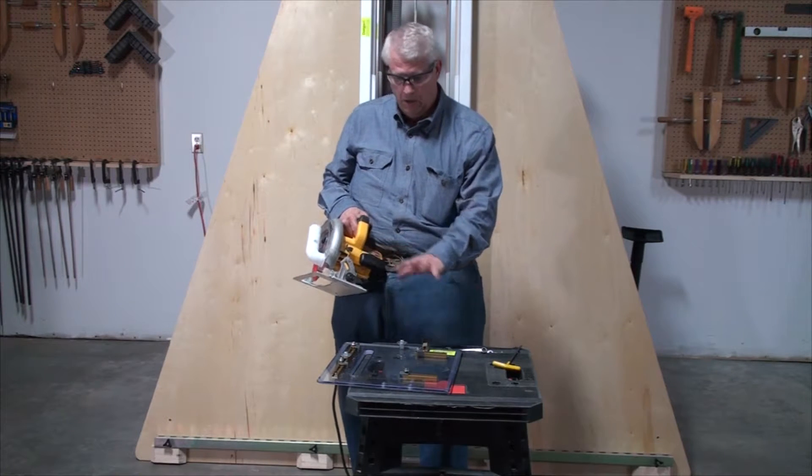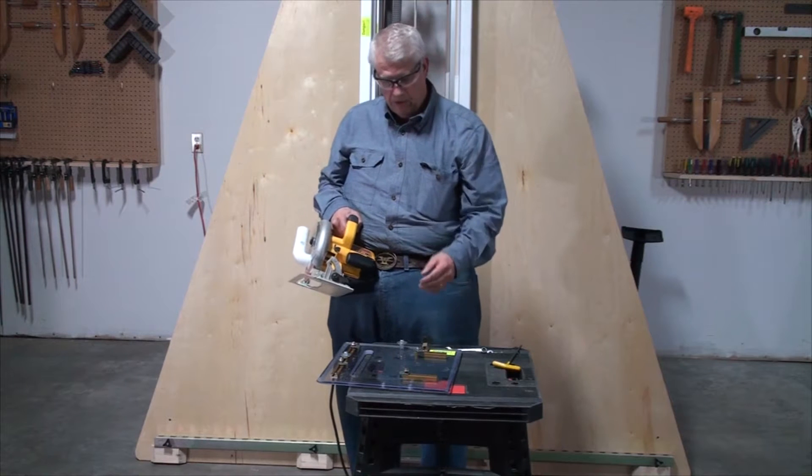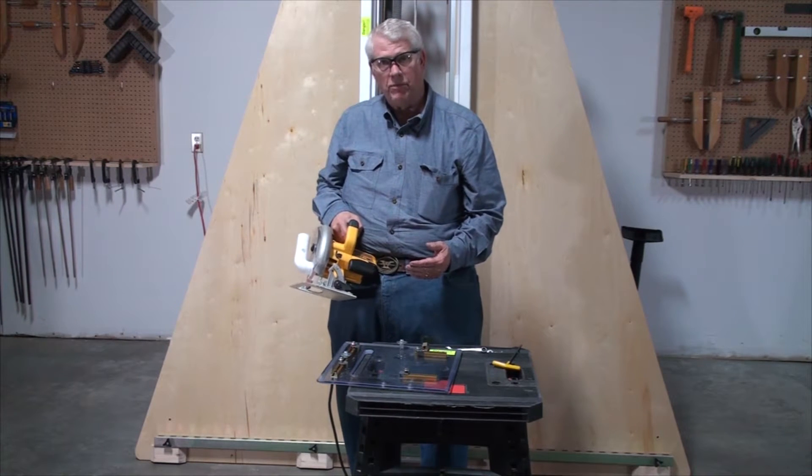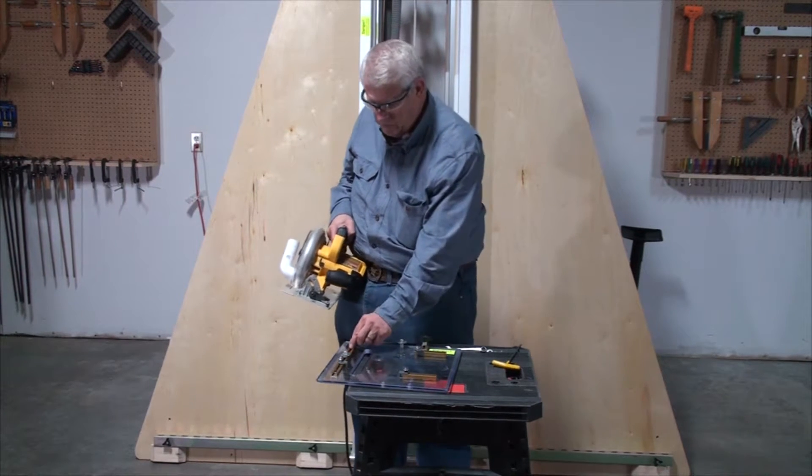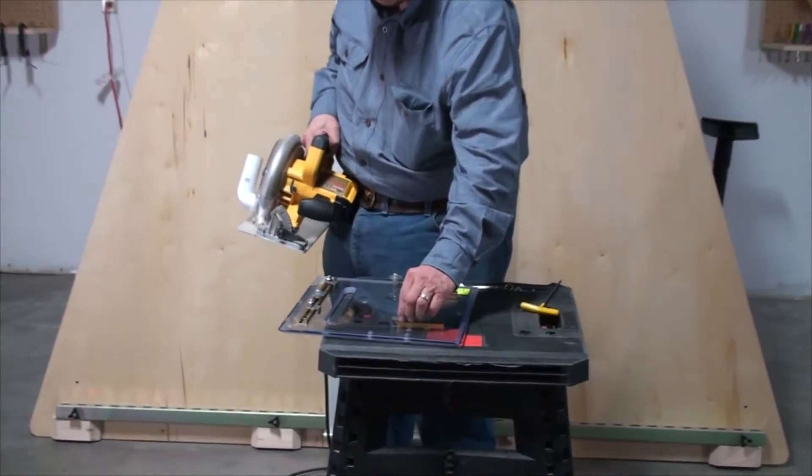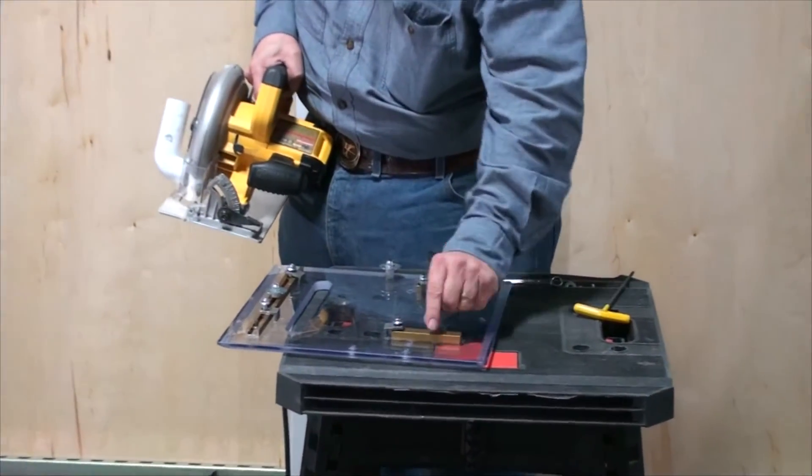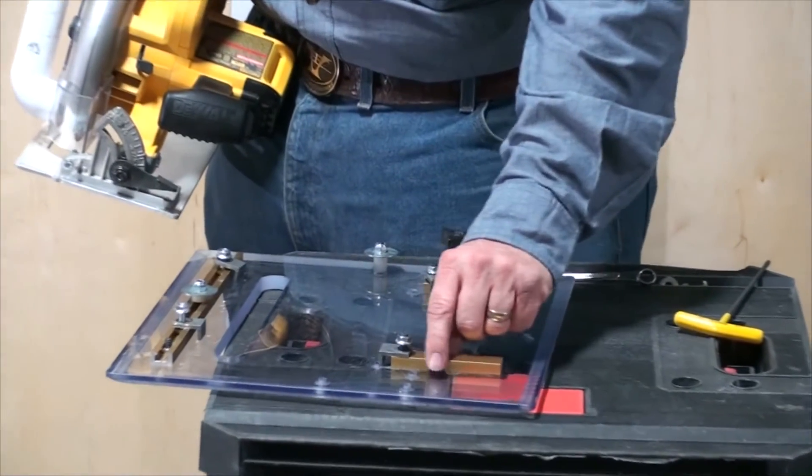Now we're going to attach the saw to the saw carriage. This is a saw carriage I've used for the past couple years. We've loosened these clips so they slide back and forth. This T-track has been loosened from the back side.